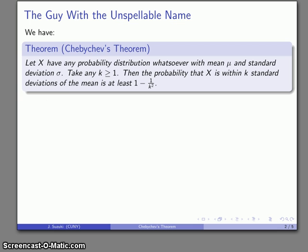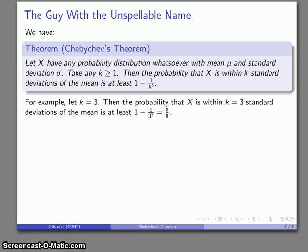Now, that's quite a mouthful to process, so let's see if we can do an example to clarify. Pick a value, take any K ≥ 1. Well, how about K = 3? So then I have my random variable X with some probability distribution. I don't know, I don't care, it doesn't make a difference, because Chebyshev's applies to any probability distribution. The probability that my random variable is within K = 3 standard deviations of the mean is at least 1 - 1/3², that's 8/9.